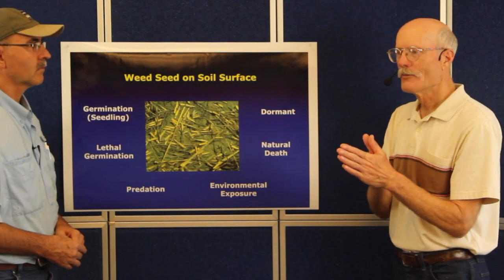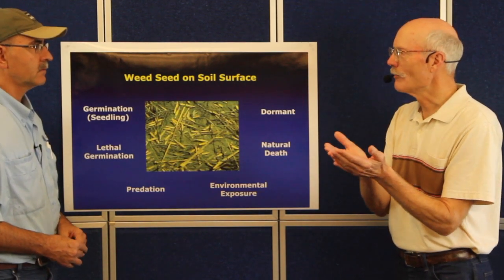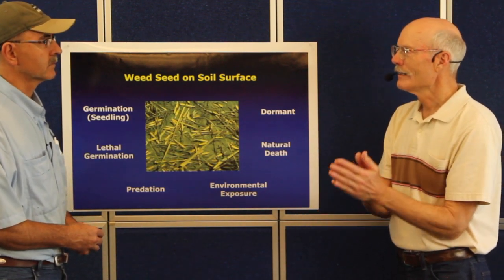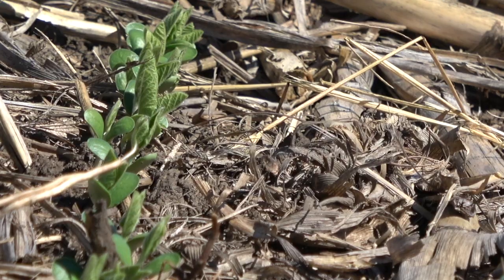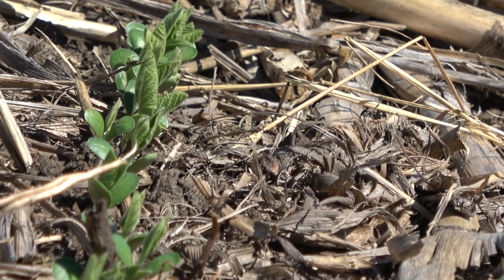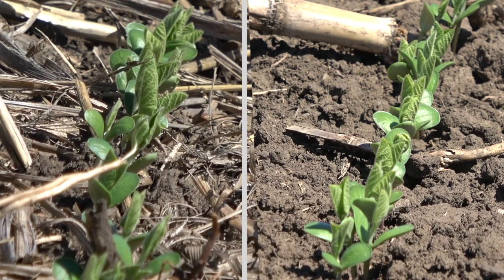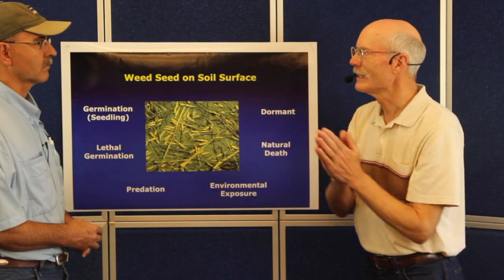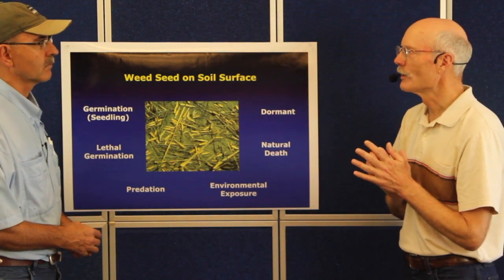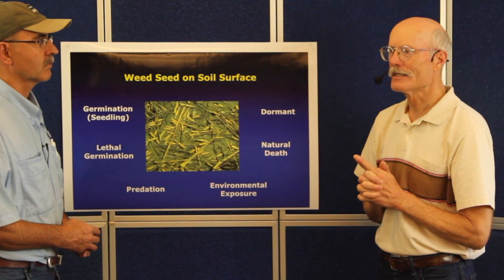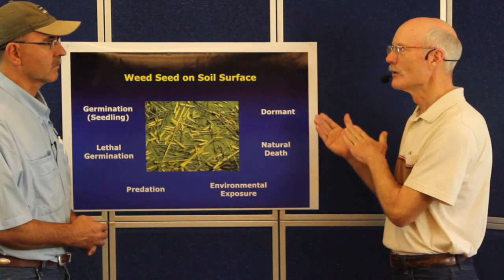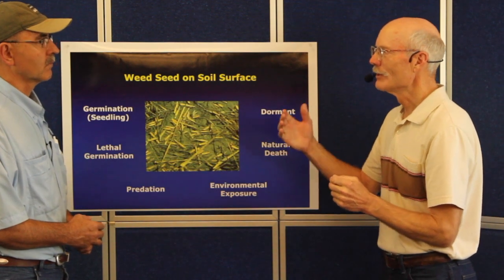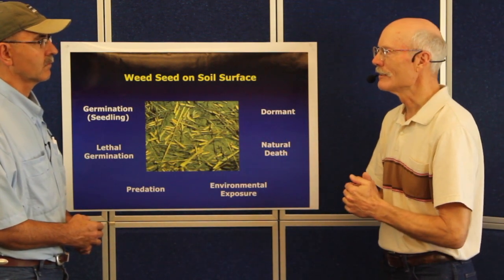We went out to a field and let the weed seeds that were produced in that growing season drop to the ground surface. Then we imposed two treatments — one was no-till and the other was tilled. Our tillage was like cultivating; it wasn't plowing. It was just blading and putting the seeds somewhere between one and four inches in the soil. We then monitored the seedling emergence over several growing seasons afterwards to try to get a sense of the trend occurring with no-till versus till and the placement of seeds in soil.